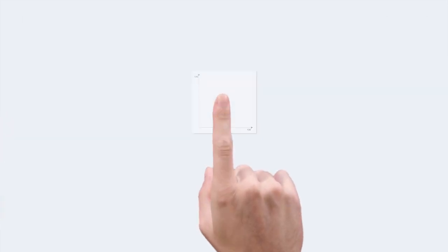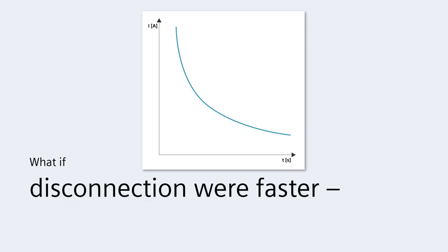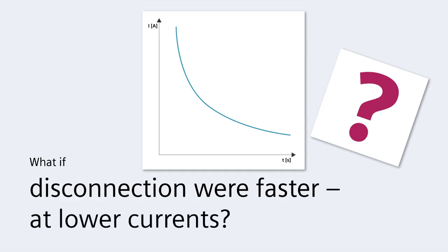A miniature circuit breaker's tripping characteristic looks like this. The higher the current, the faster the circuit breaker trips. Wouldn't it be much better if defective outputs were disconnected much more quickly and at much lower currents?